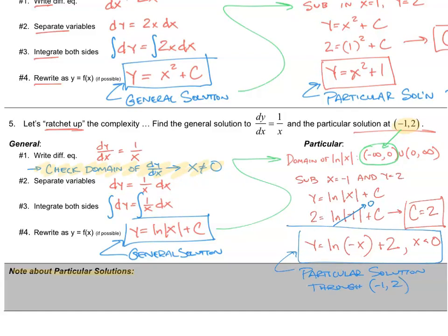I know what you're thinking — you might think I made a mistake by writing negative x instead of the absolute value of x. But remember, we're only considering the domain where x is negative, and when x is negative, the absolute value of x becomes the opposite of x. So that is not a mistake — it is correct. If you wanted to, you could have written it with the absolute value symbol as long as you included the domain restriction x less than 0, and that would still get full credit. Let's jump into the second page now.